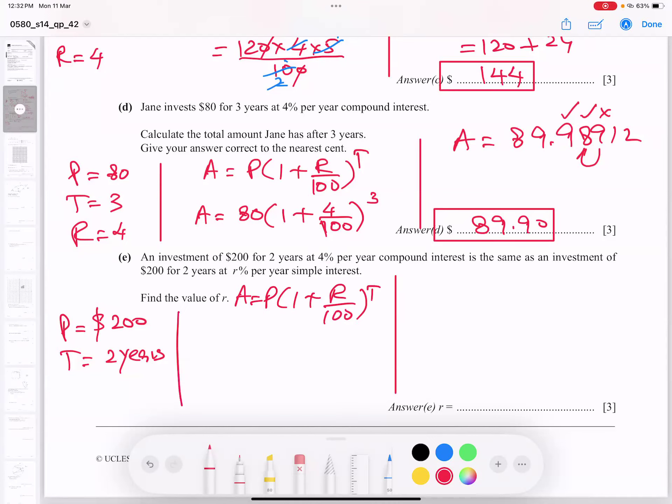So A is equal to P times 1 plus R over 100 to power T. And I'm going to plug in. P is $200. Rate of interest is 4 for compound interest. He mentioned, and power in two years. So if I type in calculator, 1 plus 4 divided by 100 and power is two years, I get $216.32.